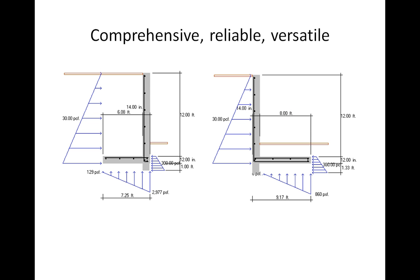In addition to its versatility, QuickWall has long been favored by engineers for its reliable solution, comprehensive output, and ease of use. While most structural engineering programs do a fine job for textbook designs, they often fail to handle situations that fall out of the norm. A typical example would be walls that lack either a toe or a heel.